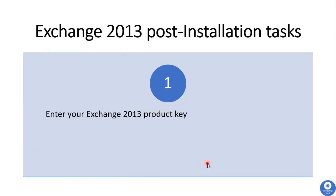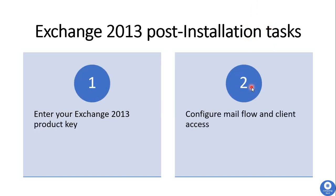For post-installation tasks, first we have to apply the product key, which tells Exchange Server 2013 whether you have purchased the Standard or Enterprise edition license. Next, we have to configure mail flow and client access — this includes configuring send and receive connectors for email flow, and for client connectivity such as Outlook or ActiveSync devices, you must configure virtual directories and certificates on Exchange Server 2013.